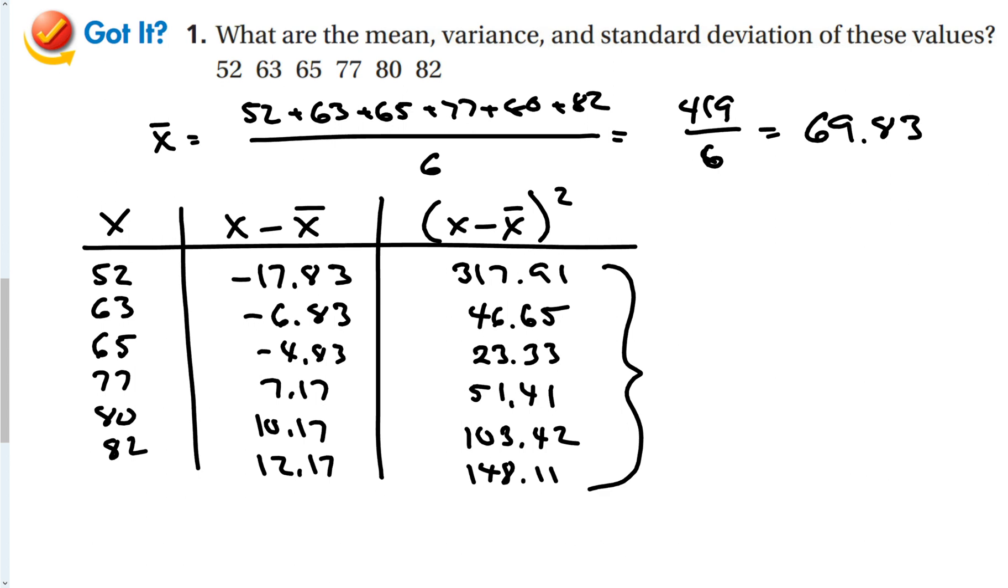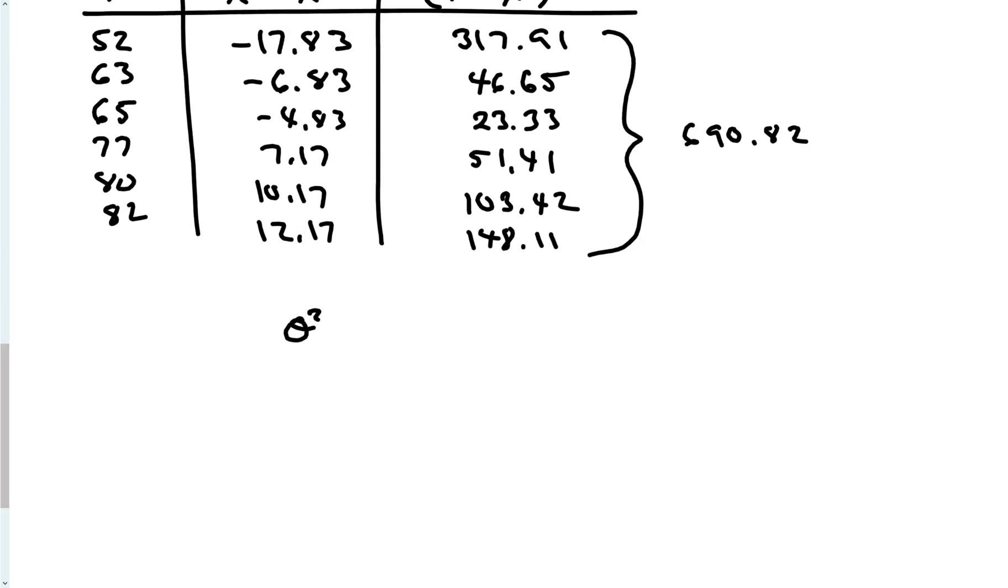Adding all those together: 317.91 plus 103.42 plus 148.11 plus 23.33 plus 51.41 plus 46.77. Adding them all up gives 690.82. Then sigma squared equals 690.82 divided by 6 to give a variance of 115.14, and the standard deviation is the square root of that, which is 10.73.